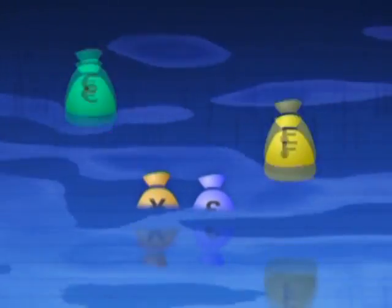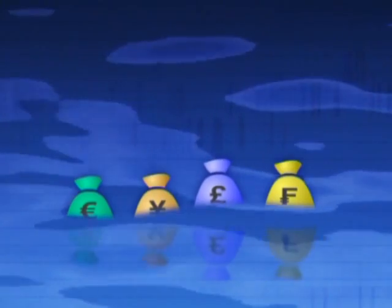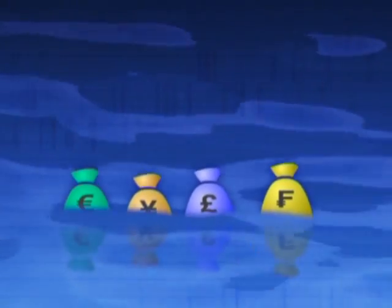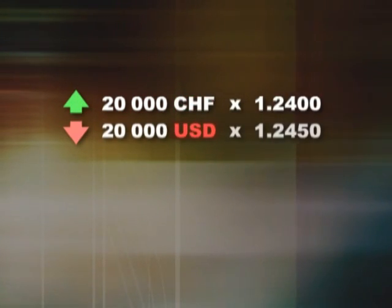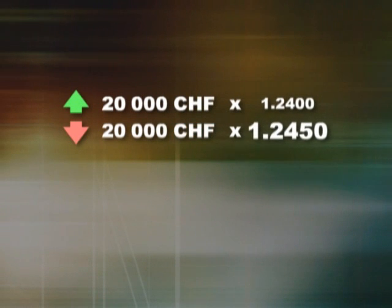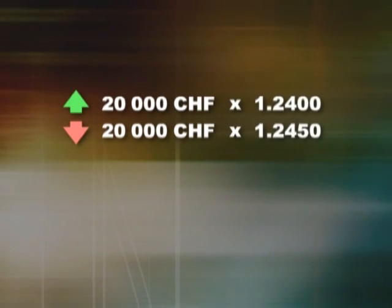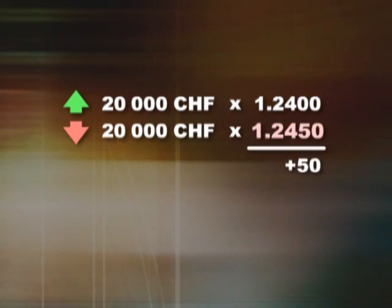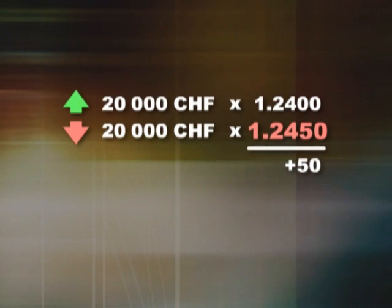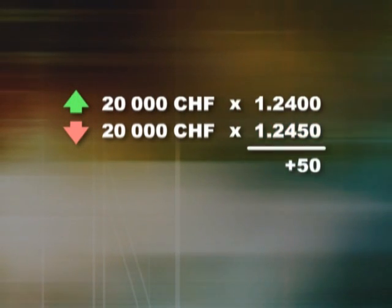When the dollar is the base currency, it's slightly more complicated because the cost of a point floats. Here is an example: you've bought 20,000 Swiss franc at 1.2400 and then sold at 1.2450. The selling price is higher than the buying price, which means you have made 50 points. We calculate the cost of one point at the closing price of the trade, 1.2450.